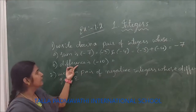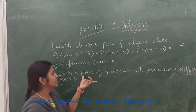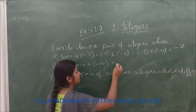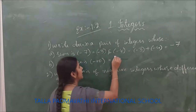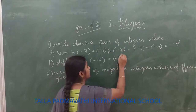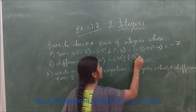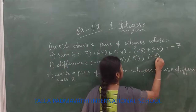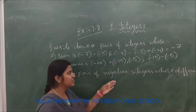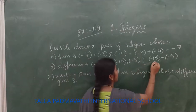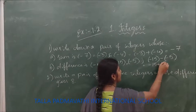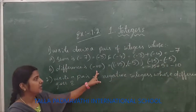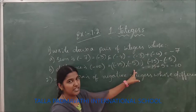Next, part B: you need to take a pair of integers such that their difference should be minus 10. Let us take minus 15 and minus 5. Now find the difference: minus 15 minus minus 5, which is nothing but minus 15 plus 5, and minus 15 plus 5 is minus 10. So you got the answer as minus 10, and your pair of integers are minus 15 and minus 5.